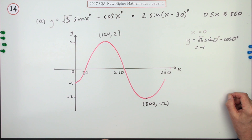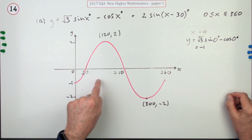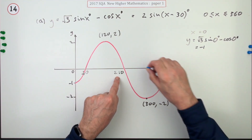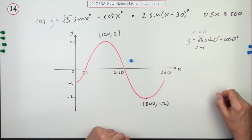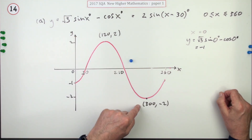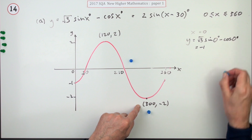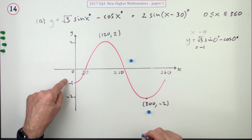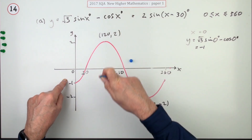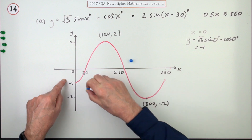The marks for Part B are: get the two roots where the graph cuts the x-axis — that's 30 and 210; get the two turning points — (120, 2) and (300, −2); and show where it cuts the y-axis, which is easier to calculate from the original equation when x = 0. Those are the three marks.